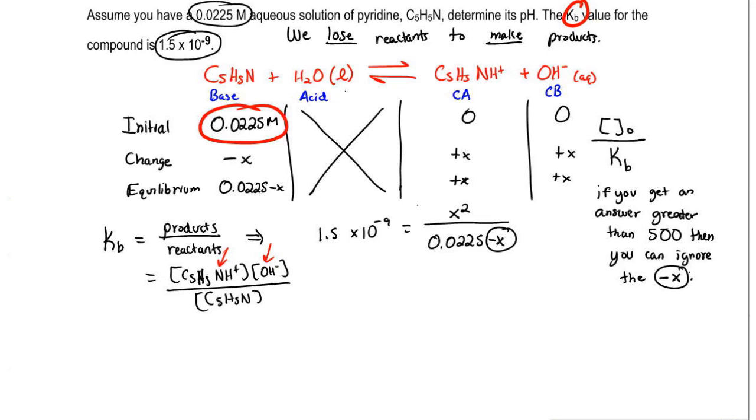So we're going to take the initial concentration, which is 0.0225, and divide it by the K value, 1.5 times 10 to the negative 9. When we do that, we get 1.5 times 10 to the 7. So that answer is incredibly large, much bigger than 500, which would mean we can ignore this minus X. So this is going to make our math a lot easier because now we don't have to do the quadratic.